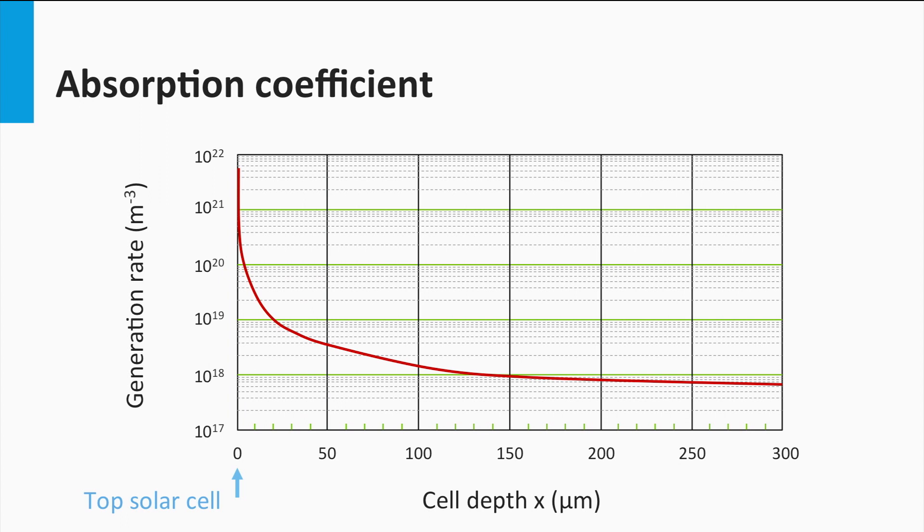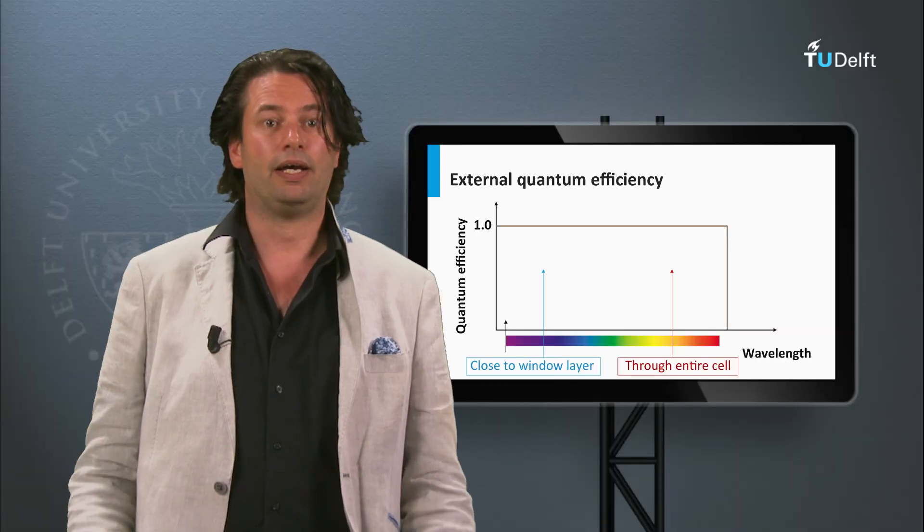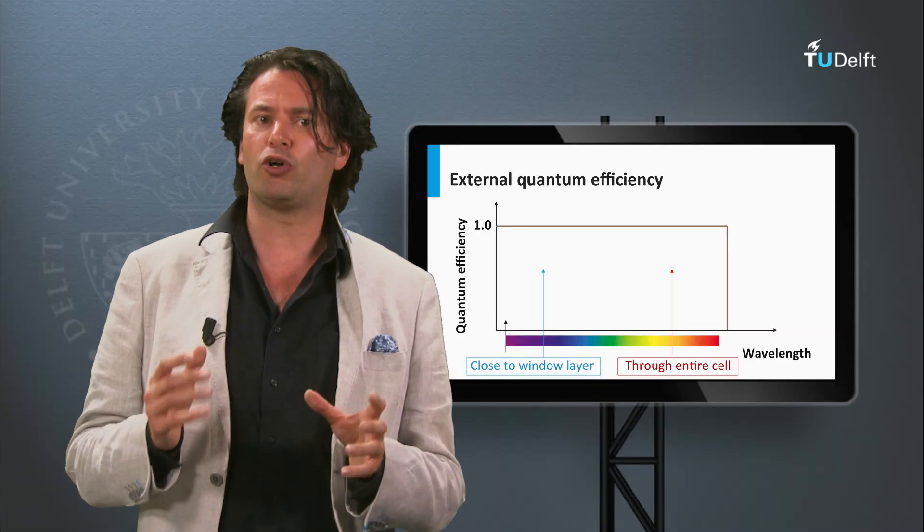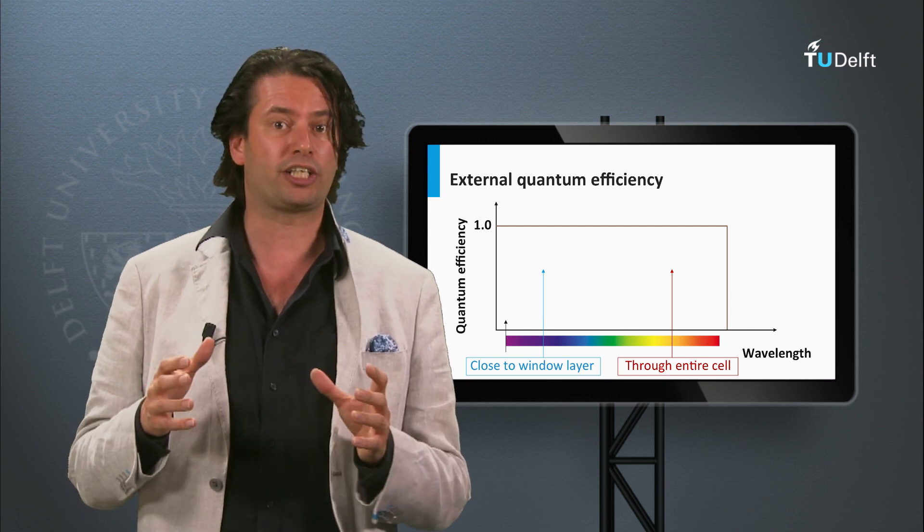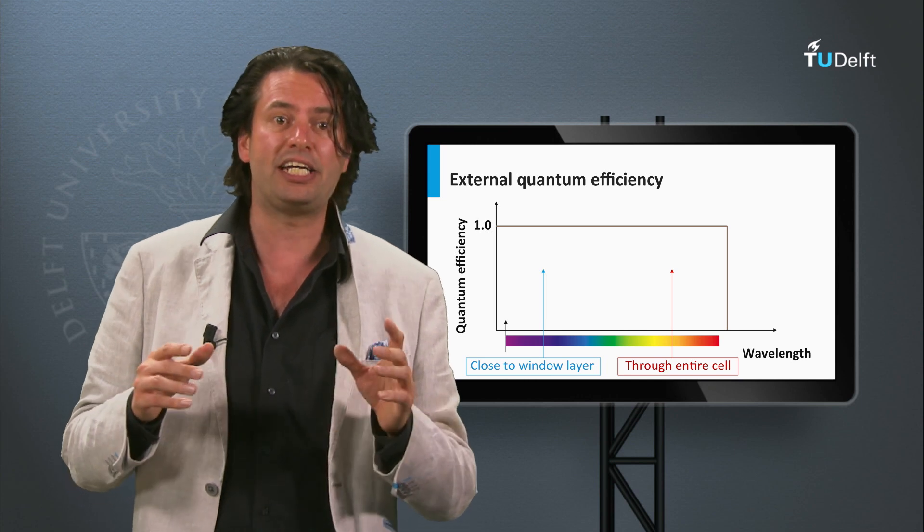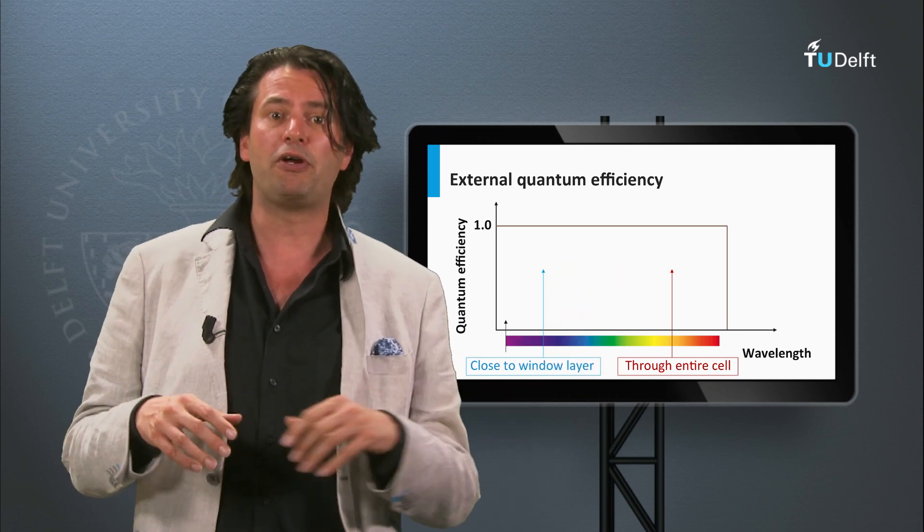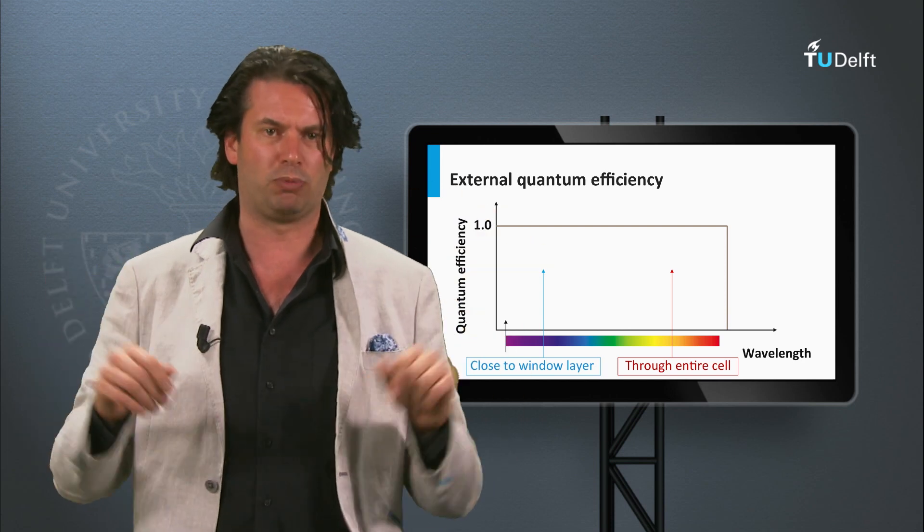As the absorption of photons generates excited charge carriers, the wavelength dependence of the absorption coefficient determines the local generation profile of the charge carriers. At the front side where the light enters the absorbing film, the generation of charge carriers is significantly higher than at the back side. It means, if we look at the EQE of a solar cell, the EQE values measured in the blue correspond to charge carriers generated close to the window layer, whereas the EQE in the red part represent charge carriers generated through the entire absorber layer.